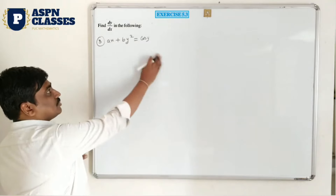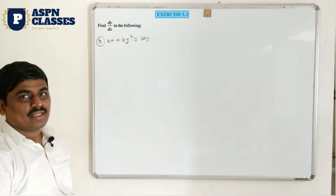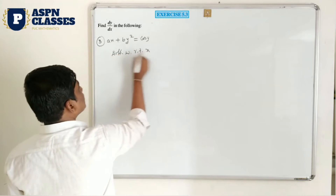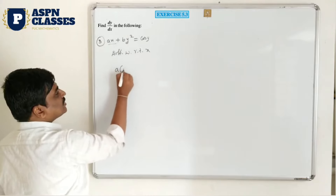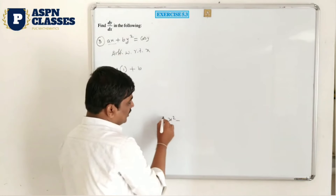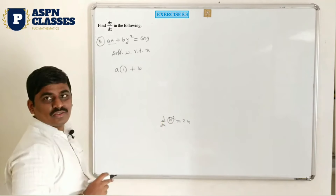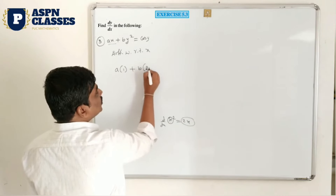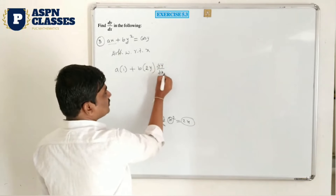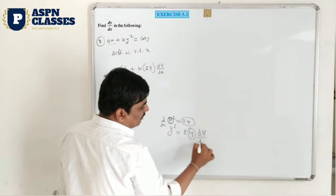Third example — this is also an implicit function. We can't write y explicitly because y is a dependent variable. Differentiate with respect to x. A as it is, x differentiation is 1, plus B as it is — y square differentiation: same as x square giving 2x, here in y's place we get 2y. So the extra term is y, write dy/dx. Next, cos y is there — cos differentiation is minus sin, so minus sin y, and y is the extra term, giving dy/dx.